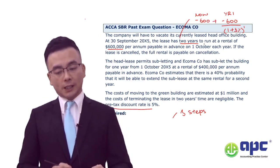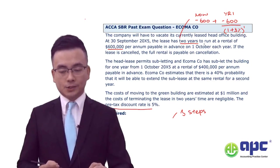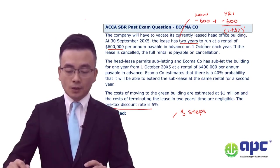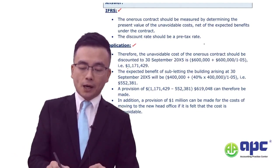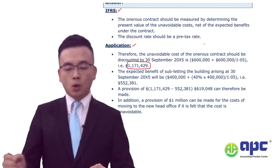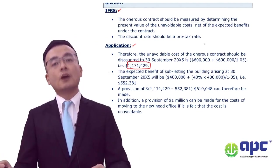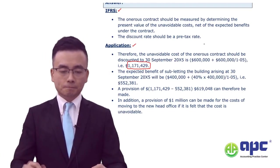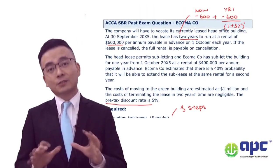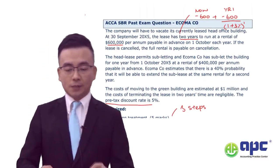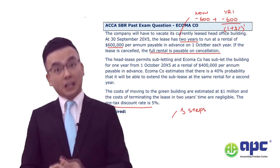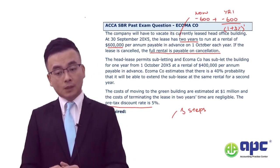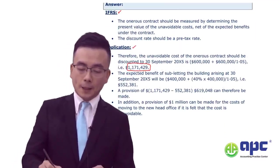So we plot them together, which means we need to calculate the unavoidable costs in present value terms. This means that if I were to fulfil that contract, I would need to pay a total of $1,171,429. Now, if I were to cancel the contract, the full rental is still payable on cancellation — we still have to pay $1.1 million for that.